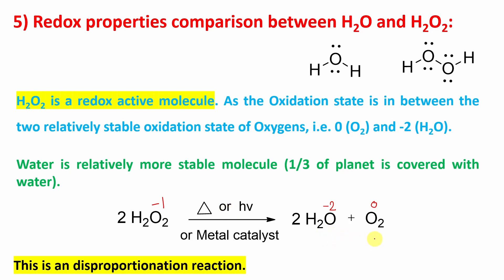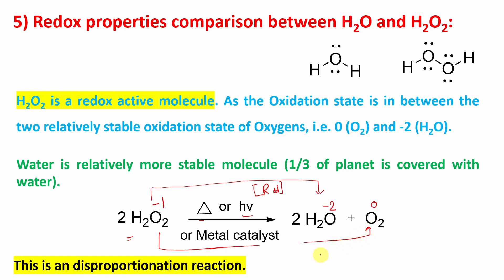Water is a very stable molecule, and oxygen is also stable — one third of the planet is covered with water and nearly 21% of the atmosphere is oxygen. These are relatively stable compared to hydrogen peroxide. If you add heat, radiation, or a metal catalyst, H2O2 can decompose. Interestingly, in one case it gets reduced to the −2 oxidation state (water) and in another case it gets oxidized to oxygen (zero oxidation state). So the same molecule undergoes oxidation in one pathway and reduction in another — this is an example of a disproportionation reaction.